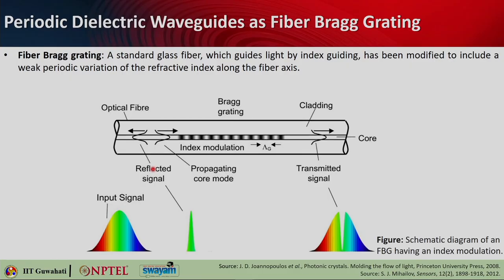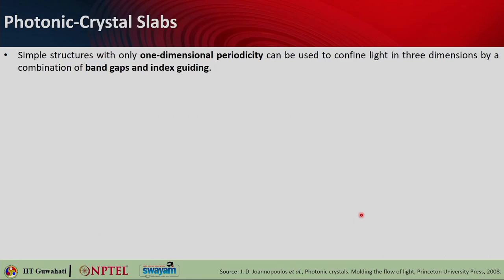One example application is the fiber Bragg grating. You take a standard glass fiber guiding light by index guiding and modify the refractive index of the core in a periodic high-low-high-low pattern, creating a kind of Bragg grating on the fiber itself. In that case, one particular wavelength or band gets reflected and the remaining gets transmitted. For example, if you design the Bragg grating to have maximum reflection at green, green will be stopped and all other colors will pass — this is how it can be used for filtering purposes.